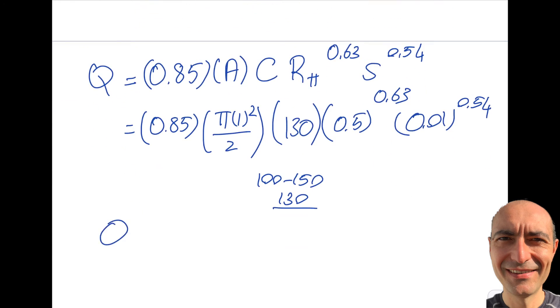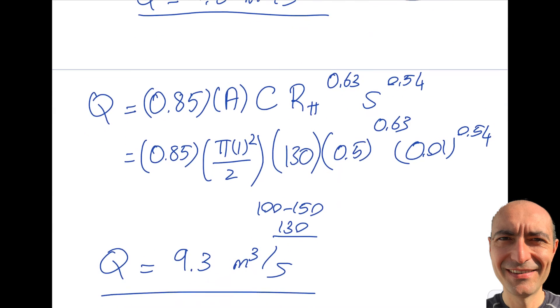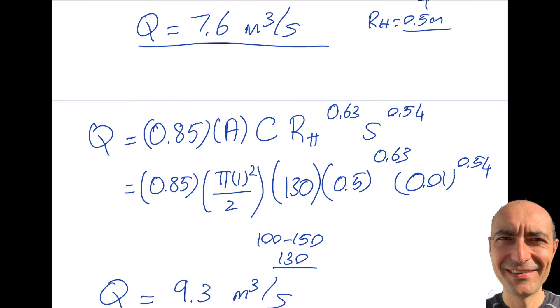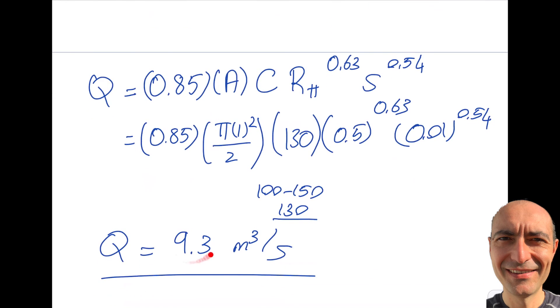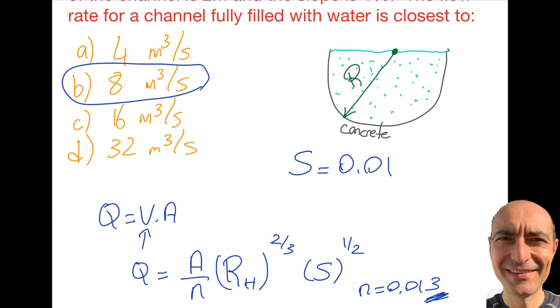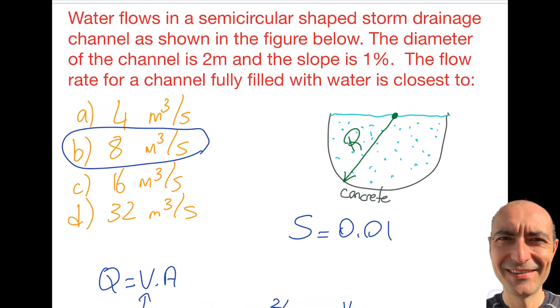When you put this into your calculator, you get 9.3 m³/s. As you can see, the Hazen-Williams equation has overshot the Manning's equation. I would say, like I mentioned before, this is the more accurate number as opposed to that. But the numbers, it doesn't matter - look at the choices. Thank you for watching this video. I hope you learned something from this particular segment.